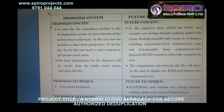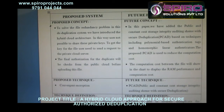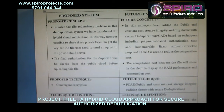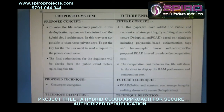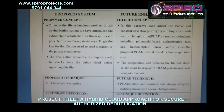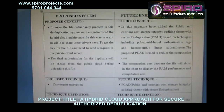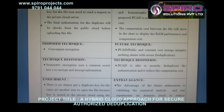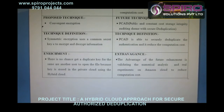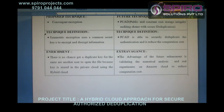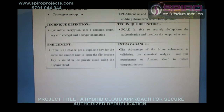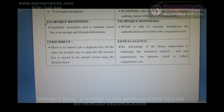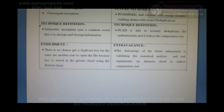For future enhancement, we added the public and constant cost storage integrity auditing scheme with secured deduplications. The proposed PCAD algorithm is used to reduce the computation cost. Using the PCAD algorithm, which stands for Public and Constant Cost Storage Integrity Auditing scheme with Secured Deduplications, there is no chance to get a duplicate key for the same or another user to open the file. The advantage of this future enhancement is validating through numeric analysis and real experiments on Amazon Cloud to reduce the computational cost.